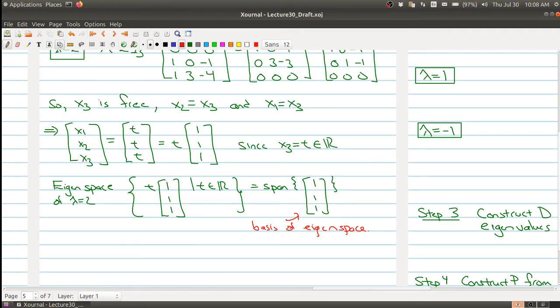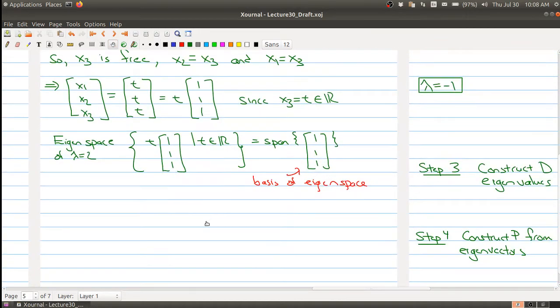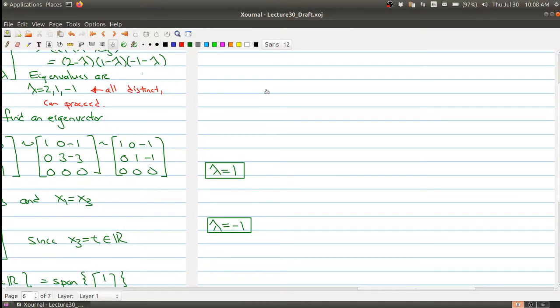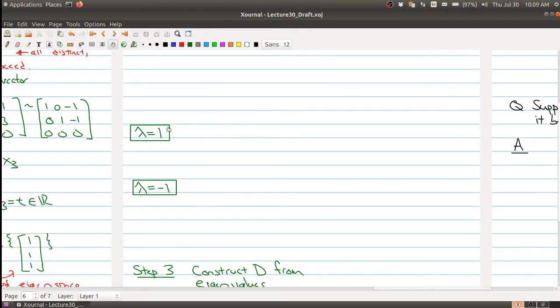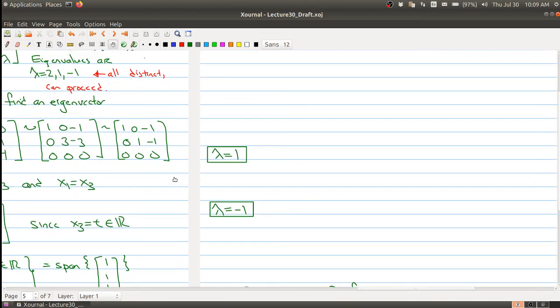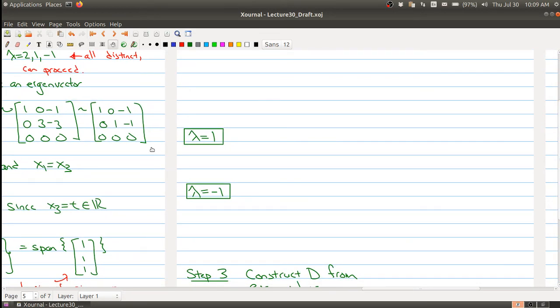Okay, so this would actually be a good time just to take a quick pause and to give you a bit of practice. What I want you to do is now find the eigenspaces for both lambda equals 1 and lambda equals negative 1, and in particular, what I want you to figure out is what are the bases of these spaces. Okay, so after the short pause, we'll finish up this example and finish up today's lecture.